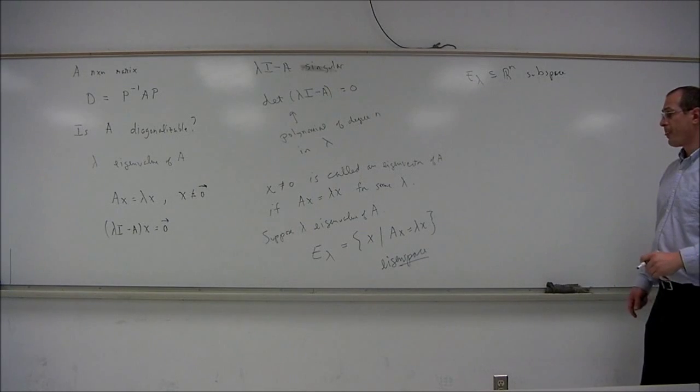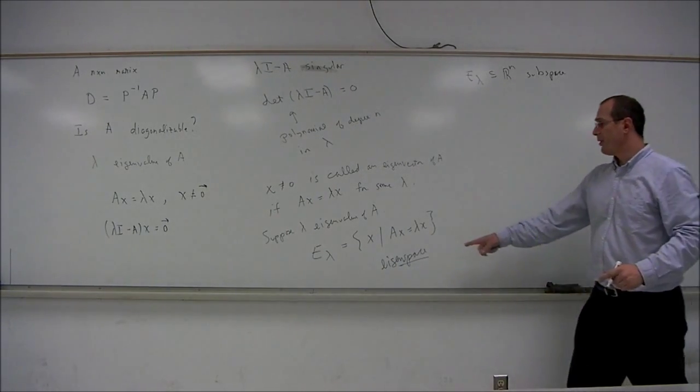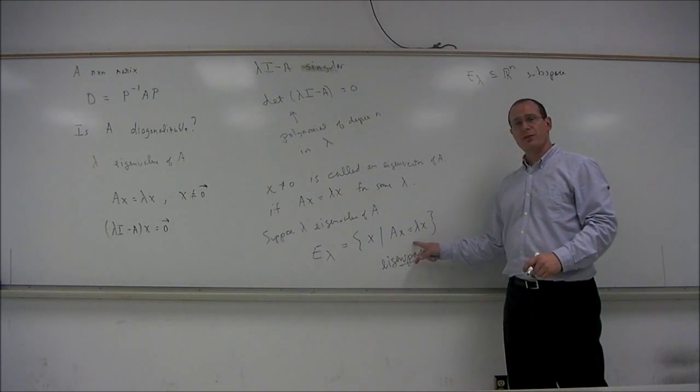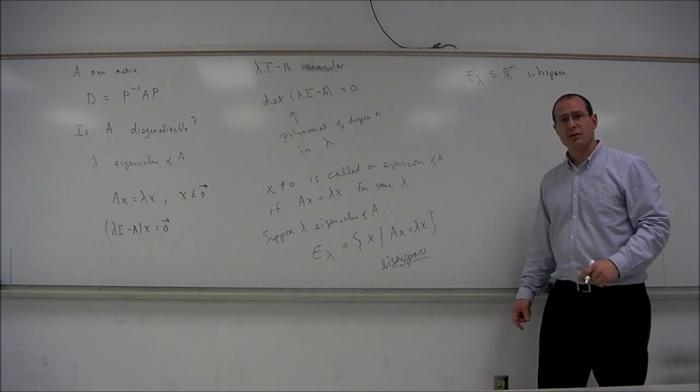We won't prove that here, but it can be proven directly by showing that the sum of two eigenvectors is an eigenvector, and a multiple of an eigenvector is an eigenvector.